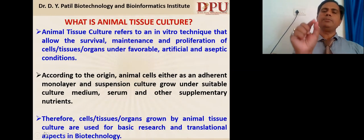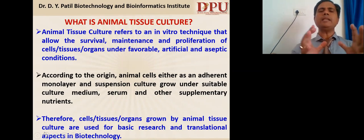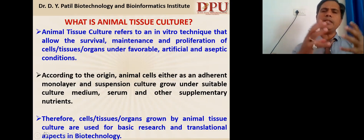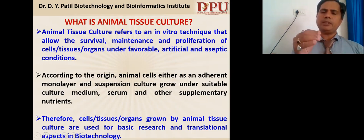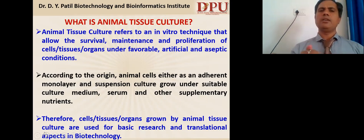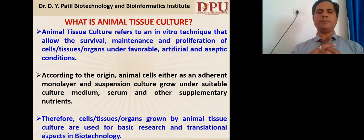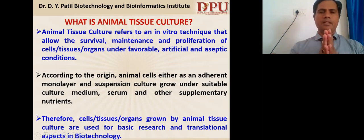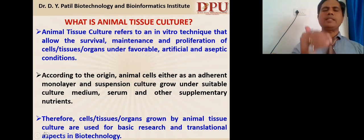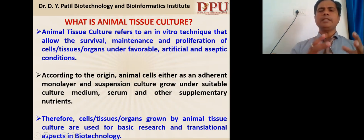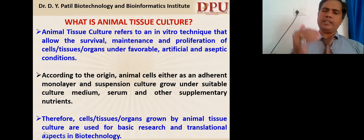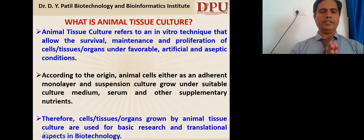Animal tissue culture essentially consists of a combination of various in vitro techniques that allow the survival, maintenance, and proliferation of cells, tissues, and organs under favorable, artificial, and aseptic conditions. According to the nature and origin of the cell, animal tissue culture can be classified as adherent monolayer and suspension culture, in suitable culture media conditions.